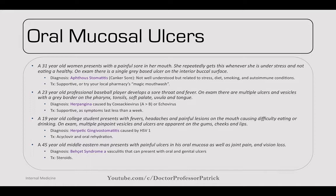Next, a 23-year-old professional baseball player develops a sore throat and fever. On exam, there are multiple ulcers and vesicles with a gray border on the pharynx, tonsil, soft palate, uvula, and tongue. This is herpangina — caused by Coxsackievirus A more likely than B, or echovirus, sometimes called hand, foot, and mouth disease.